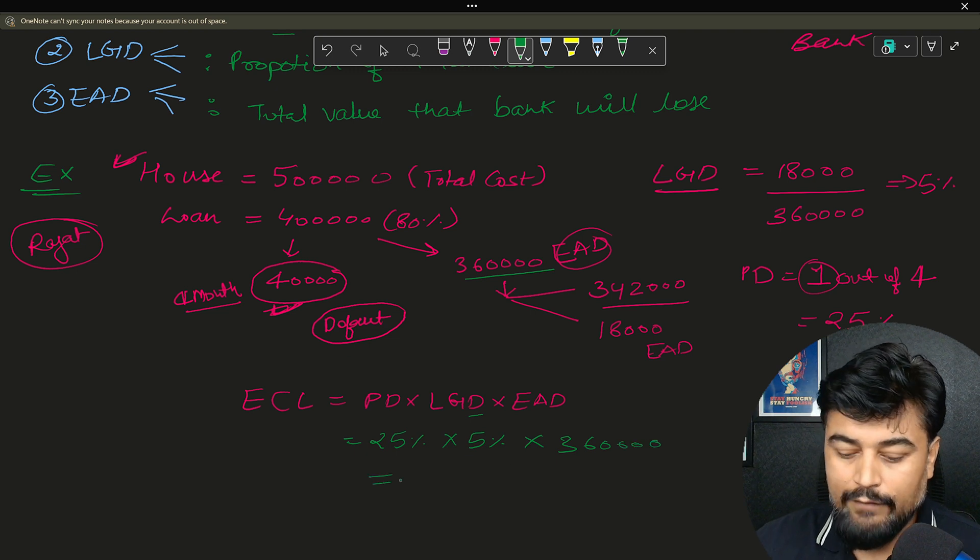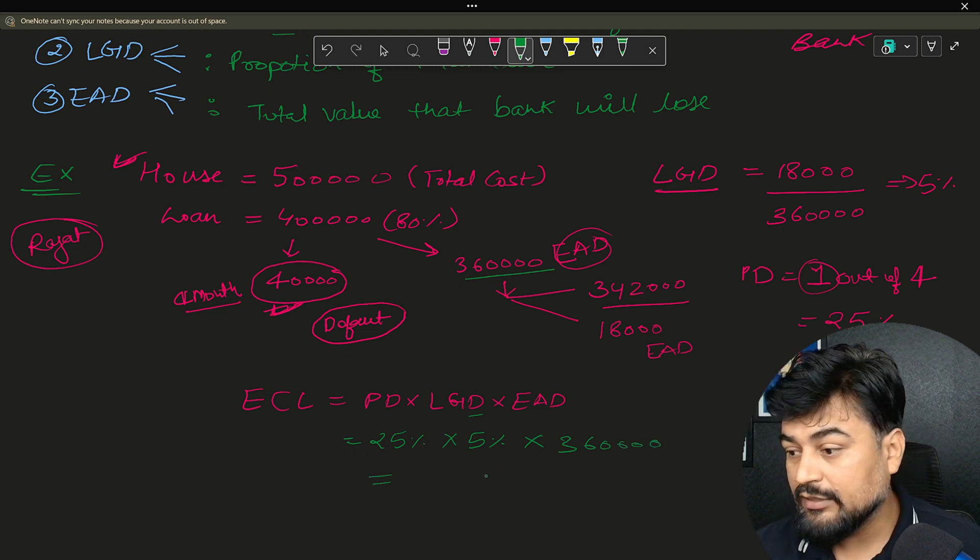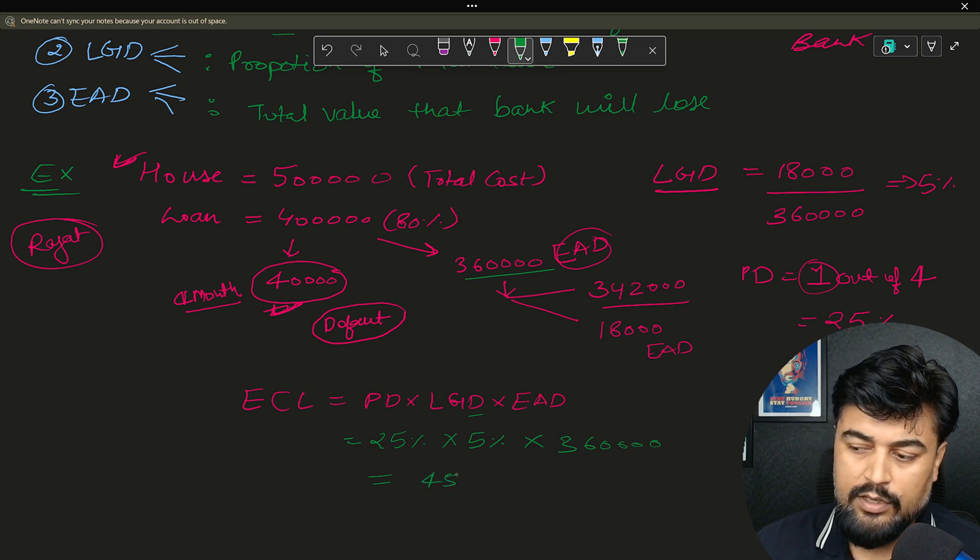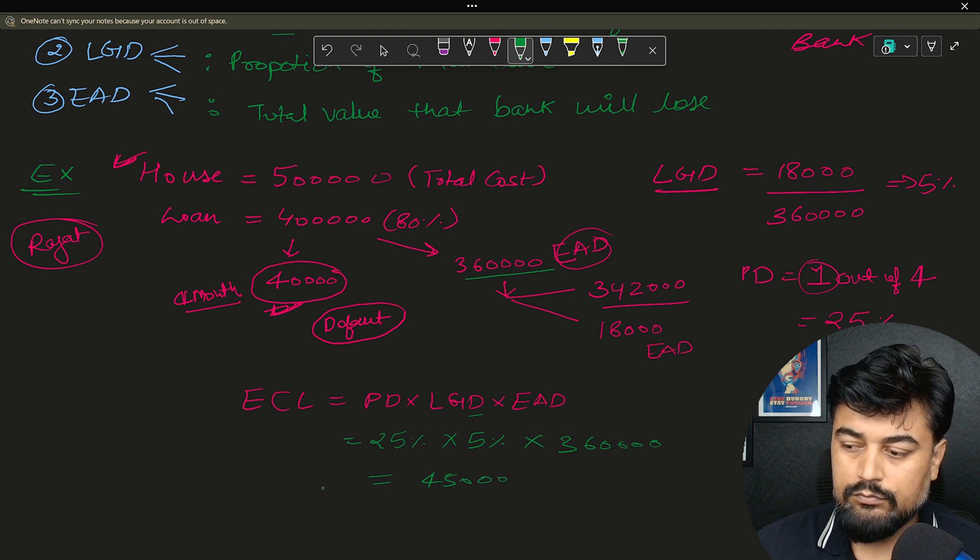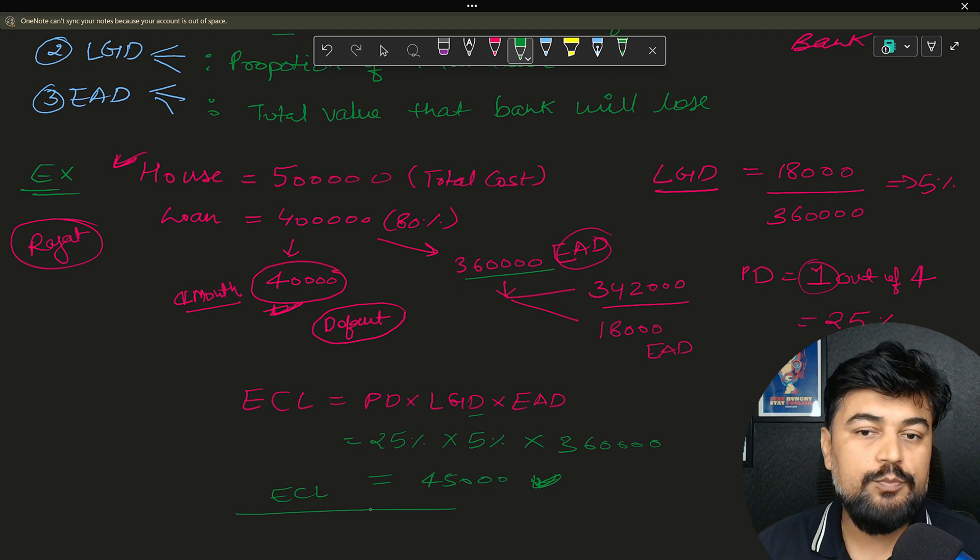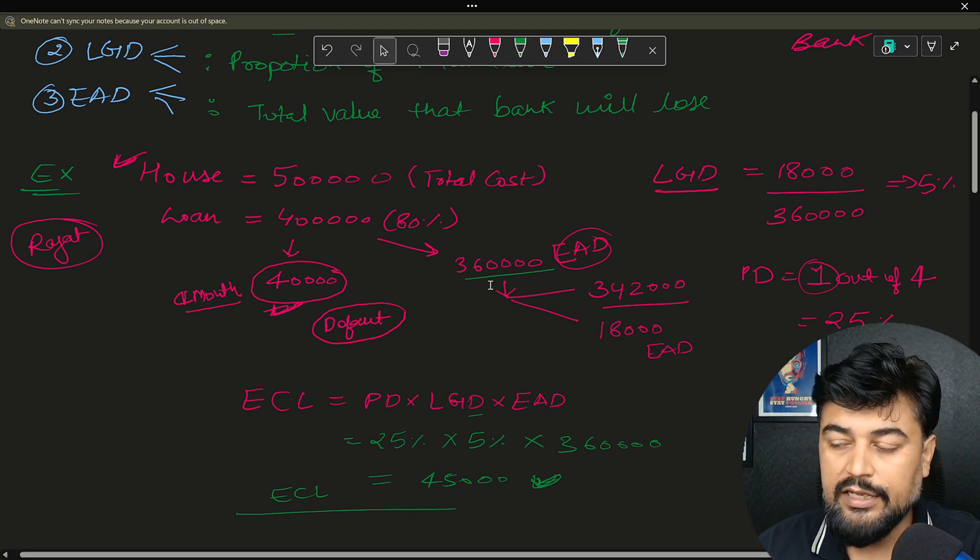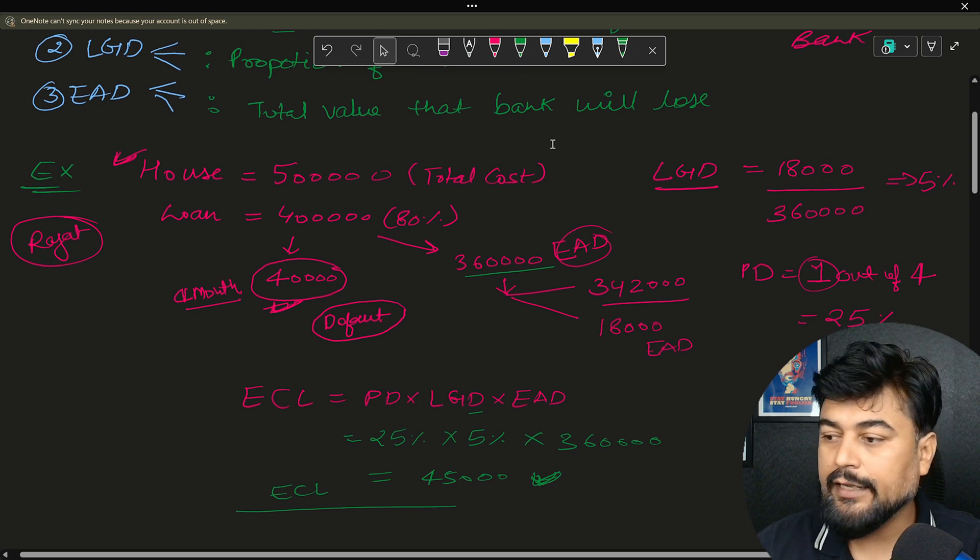So whatever the value will come in the output, that is close to, if you multiply all this, so this will come somewhere close to some 45,000. So that is your ECL including all values. That's how you calculate the expected credit loss. And this is the formula overall which we use generally to calculate expected credit loss.